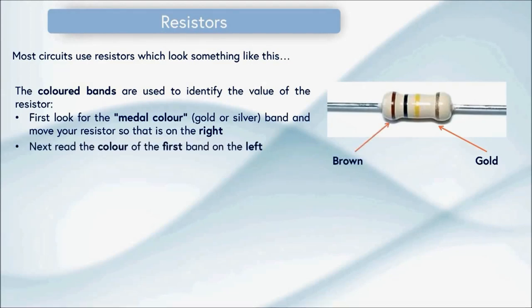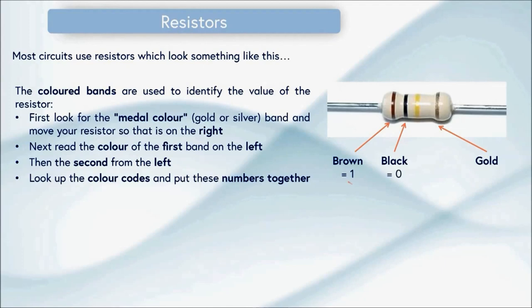Next read the colour of the first band on the left. In this case it's a brown one. Then we're going to read the second from the left which in this case is black. Then you need to look up the colour codes for your resistors and put these numbers together. So we know that brown is 1 and black is 0 so if we put these together we end up with 10.